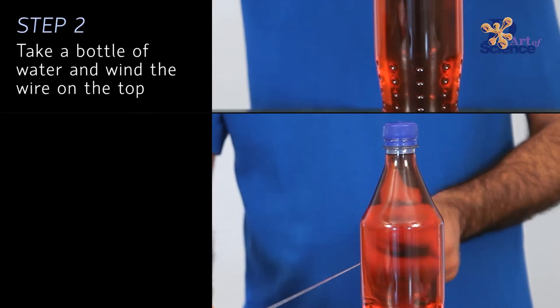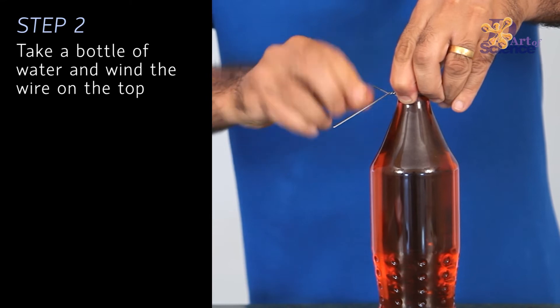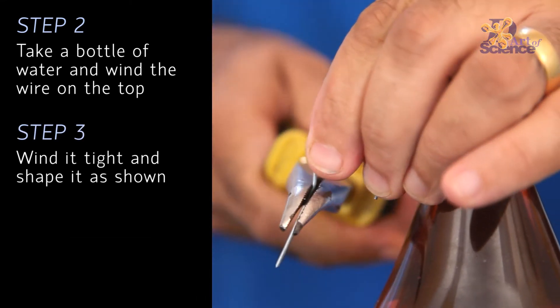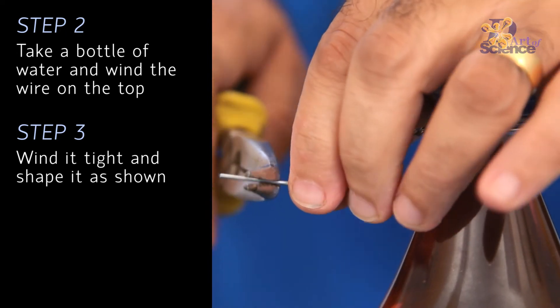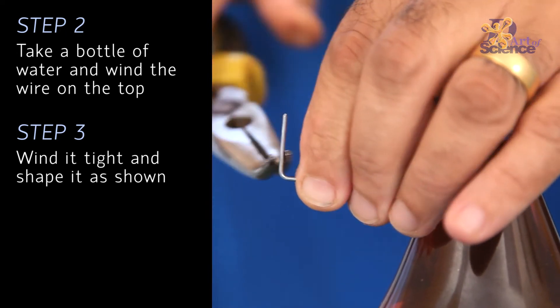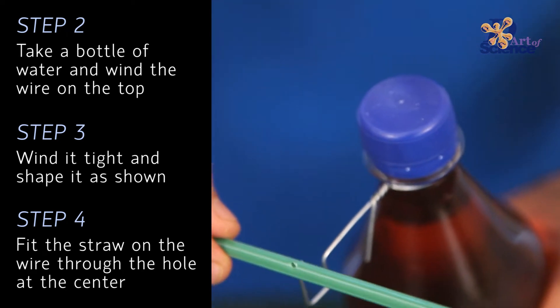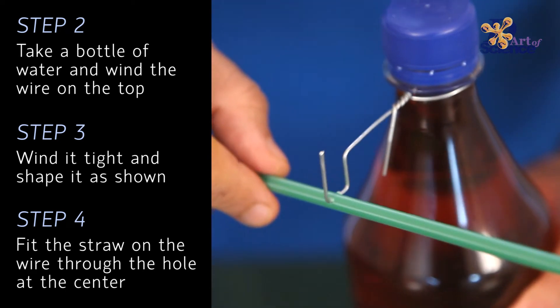These two are the endpoints of the seesaw where the kids sit. In our experiment, on either end we will have two candles in place of the kids. The point on the straw that is connected to the bottle through the wire is known as the pivot point or the fulcrum.